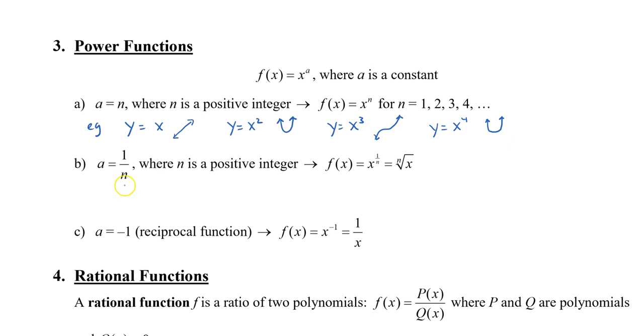When a = 1/n, so the exponent is rational, n is a positive integer, then you'll notice that you get graphs that look like this. For example, we know that y = x^(1/2), which is actually the square root of x, that gives us something that looks like this, kind of like a shooting star. If we have y = x^(1/3), which is the cube root of x, it looks something like this.